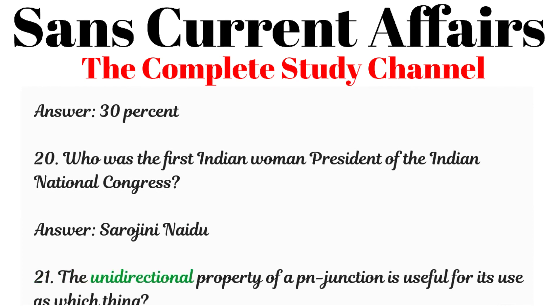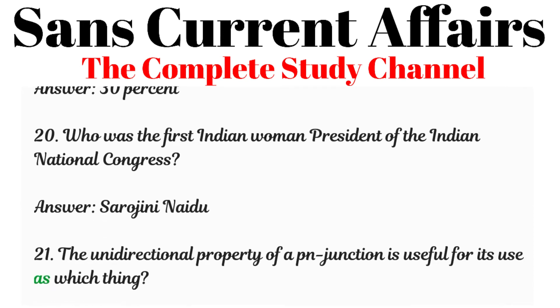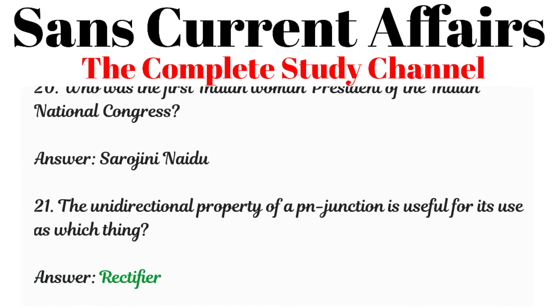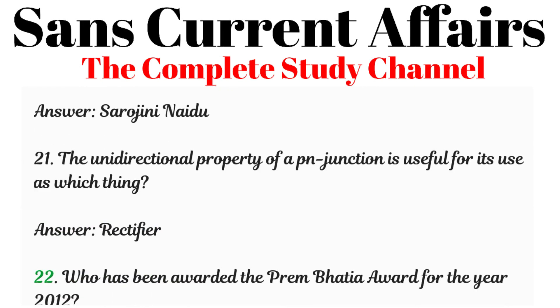Question 21: The unidirectional property of a PN Junction is useful for its use as which thing? Answer: Rectifier.